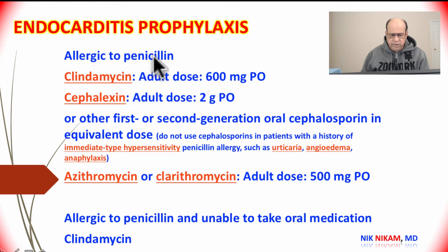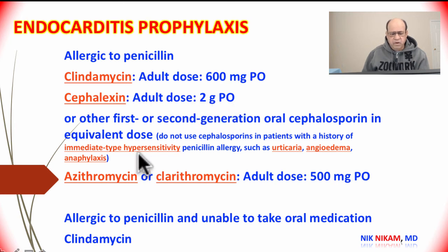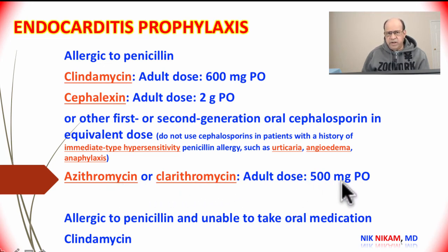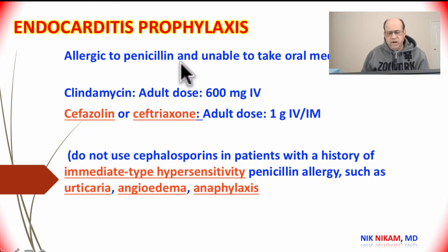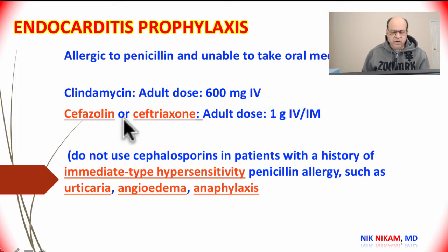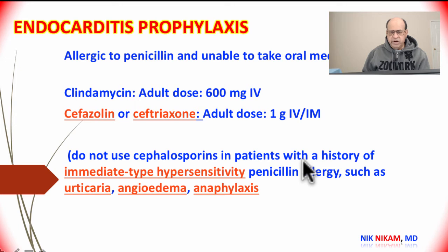If the person is allergic to penicillin, we have a choice of clindamycin given as 600 milligrams orally as one dose, or cephalexin 2 grams by mouth. We can also consider zithromycin or clarithromycin in a dose of 500 milligrams, 30 to 60 minutes before the procedure. For patients allergic to penicillin who cannot take medications by mouth, we have a choice of clindamycin 600 milligrams IV as a single dose, or cefazolin or ceftriaxone 1 gram IV or intramuscularly. We should avoid using cephalosporins in patients with a history of immediate-type hypersensitivity to penicillin, such as urticaria, angioedema, or anaphylaxis.